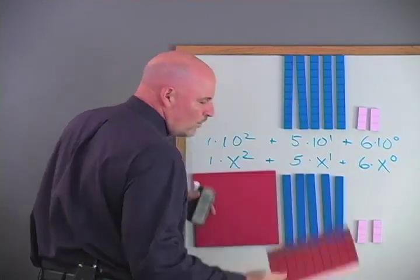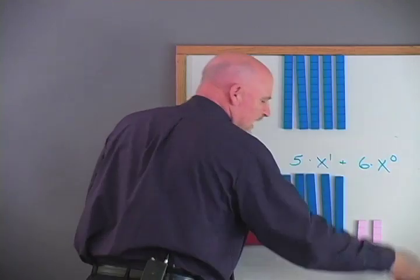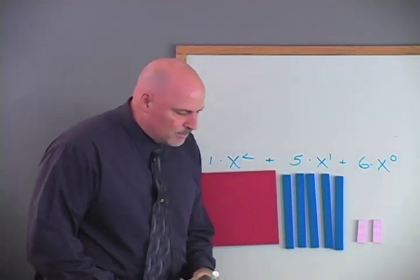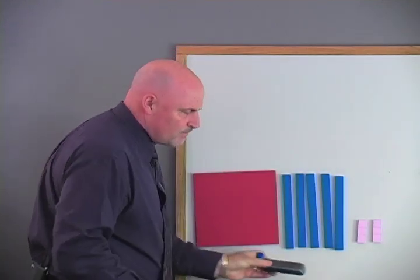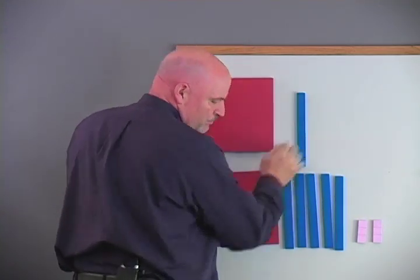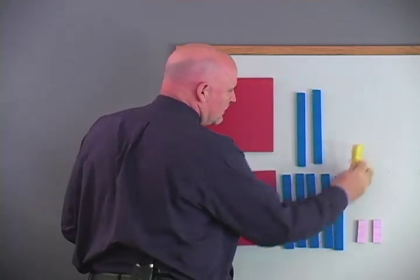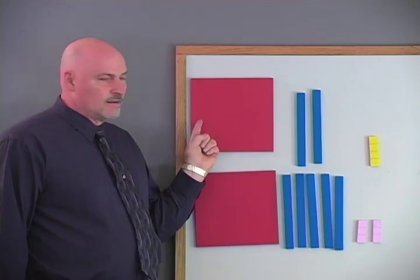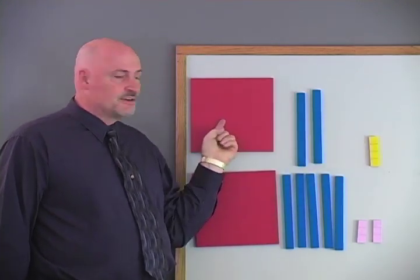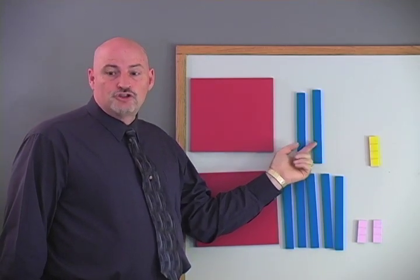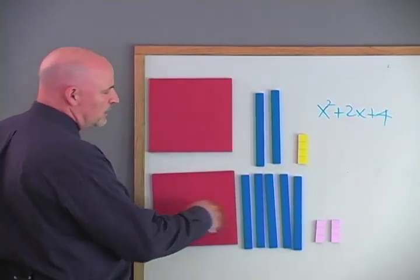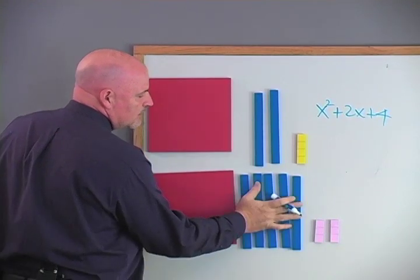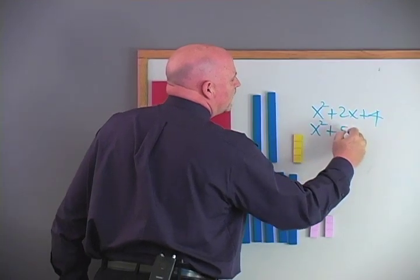So now we're going to start operating more and more in just base x, which is what most people do when they study algebra. So let's say that you have a problem like this. Let's see if we wanted to add this plus this. What's this expression? How would you put this with letters? x squared plus 2x's plus 4. So we could write that as x squared plus 2x plus 4. How about this one here? x squared plus 5x plus 6.